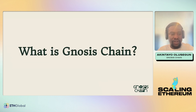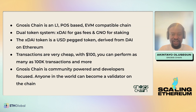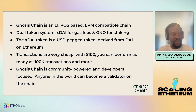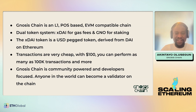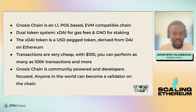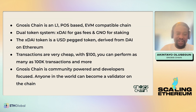So what is Gnosis Chain? Gnosis Chain is an L1 Proof-of-Stake EVM-compatible chain. It is compatible with Ethereum and you can build on it the same way you build on Ethereum. It operates with a dual token system — one token for gas and one for staking. xDai is used for gas and GNO for staking. xDai itself is pegged one-to-one with the US dollar and is derived from DAI on Ethereum.